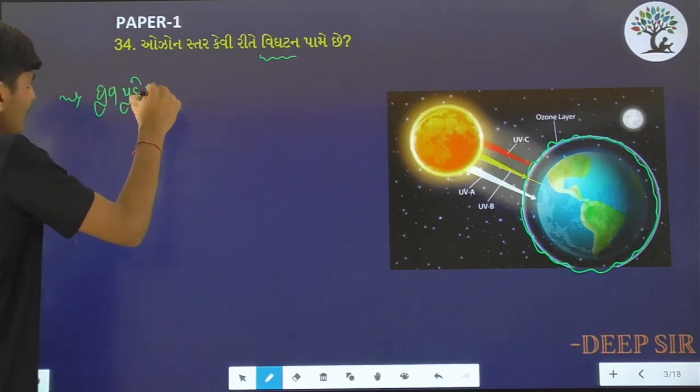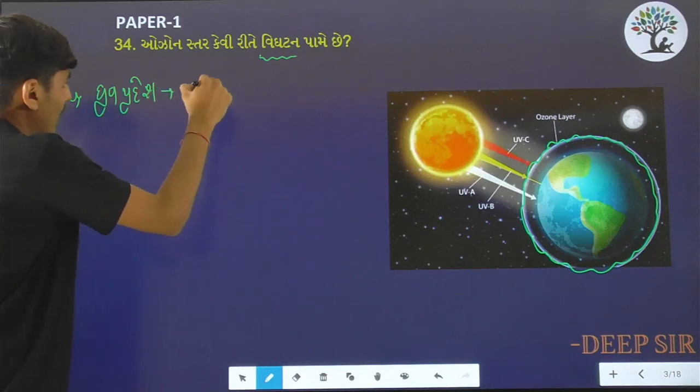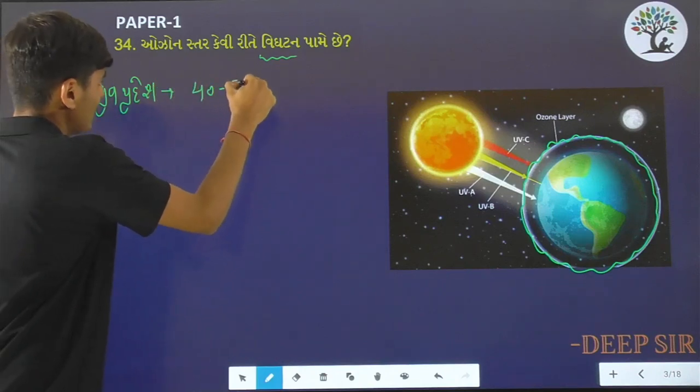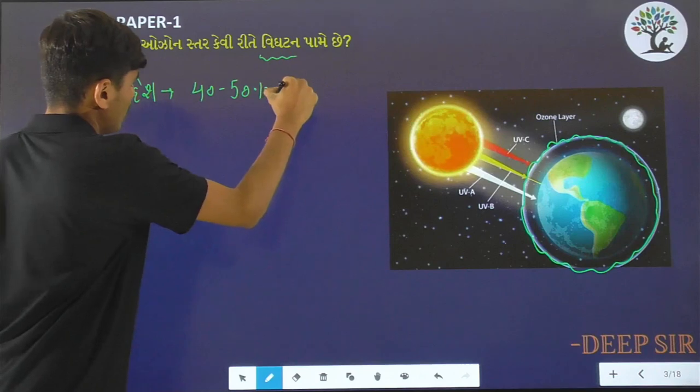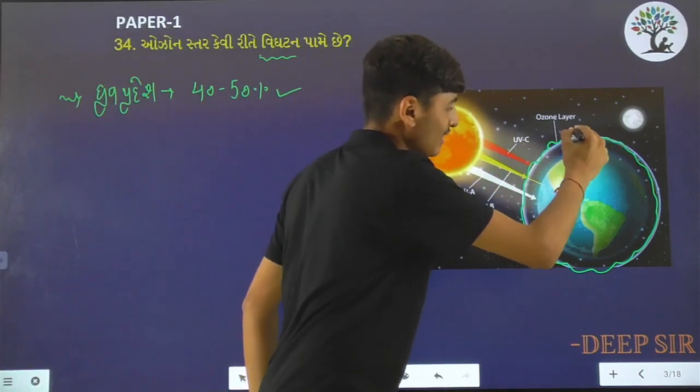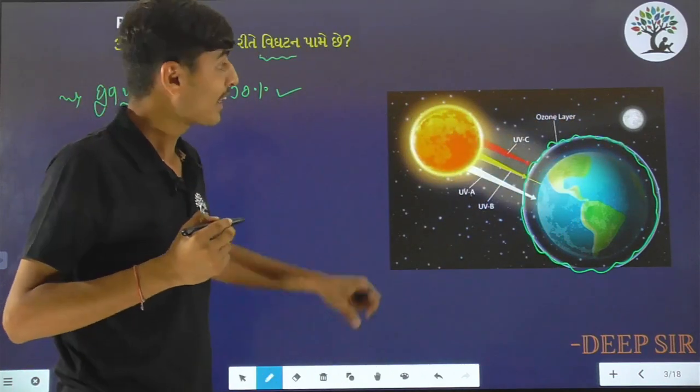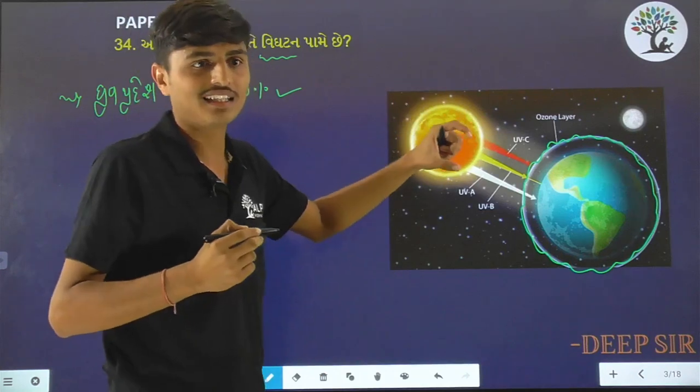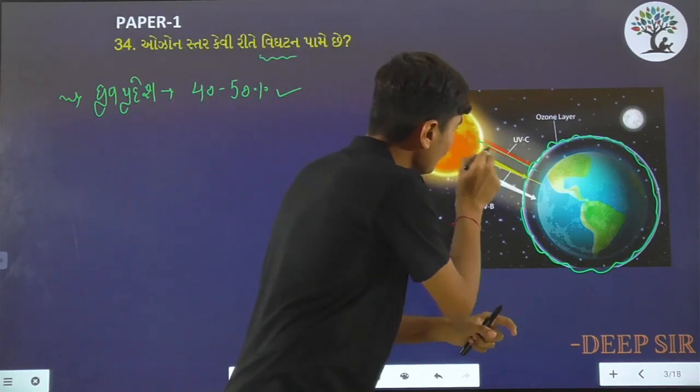At high altitudes, there are concentrations of 40-50 km of ozone. It protects from harmful radiation. Because there are many advantages to the ozone - it blocks ultraviolet radiation.